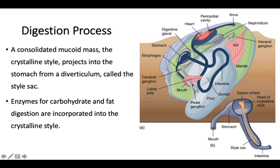The digestion process involves a consolidated mucoid structure called the crystalline style. This style mass enters the digestive system, and the blue line in the diagram represents the digestive tract. The anus lies posteriorly, close to the excurrent opening. Both carbohydrate and fat enzymes are incorporated in the style, which represents the food bolus present in an esophagus-like duct, as shown in the diagram.